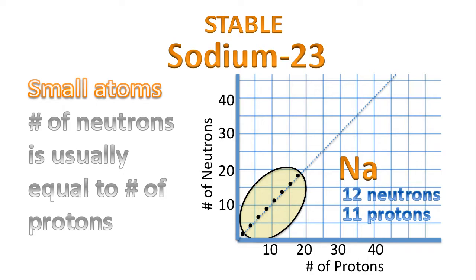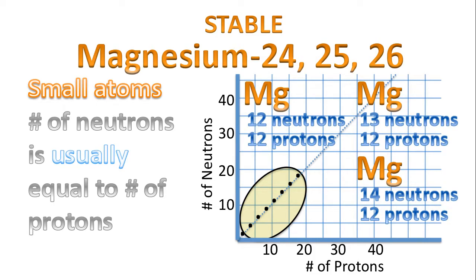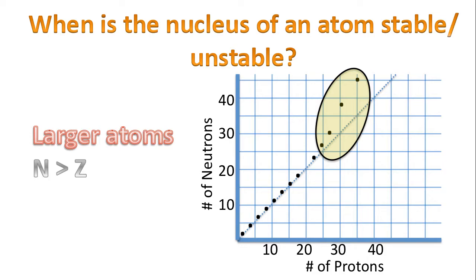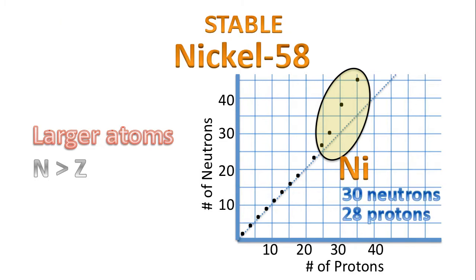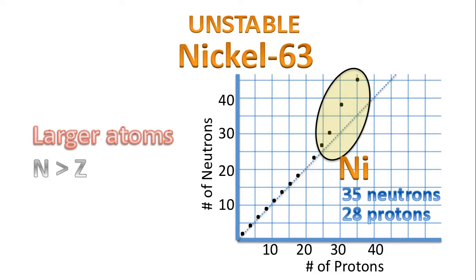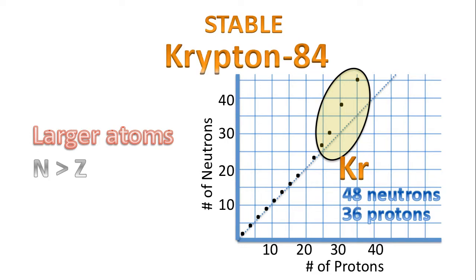Sodium-23 with 12 neutrons and 11 protons is considered stable, but sodium-24 with an extra neutron is unstable. Magnesium-24, magnesium-25, and magnesium-26 are all considered stable. For larger atoms, in general, the number of neutrons is greater than the number of protons for the atom to be considered stable. Nickel-58 with 30 neutrons compared to 28 protons is stable, but nickel-63 with 35 neutrons is unstable. Krypton-84 is considered stable with 48 neutrons compared to 36 protons, but krypton-85 is unstable with an extra neutron.